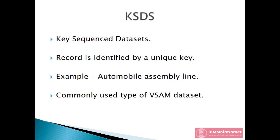Key Sequence Datasets, or KSDS. In a KSDS, each record is identified by a unique key. When you write new data, you create a key for it. For example, if this were an automobile assembly line, the index might be a unique vehicle identification number, and the data portion holds what features that car is being built with, what color it is, which dealership it's going to, all that stuff. Whenever we want that specific piece of information, we look it up by the key. This is the most commonly used type of VSAM dataset.